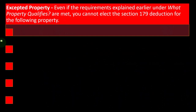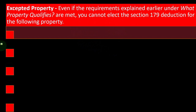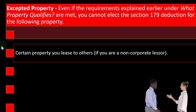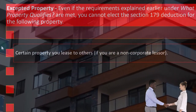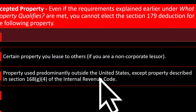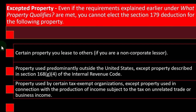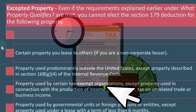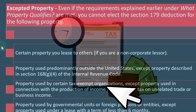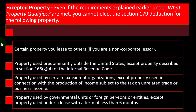Excepted property: even if the requirements explained earlier are met, you cannot elect the Section 179 deduction for the following. Certain property you lease to others if you are a non-corporate lessor. Property used predominantly outside the United States, except property described in Section 168(g)(4) of the Internal Revenue Code. Property used by certain tax-exempt organizations, except property used in connection with the production of income subject to tax on unrelated trade or business income. Property used by governmental units or foreign persons or entities, except property used under a lease with a term of less than six months.